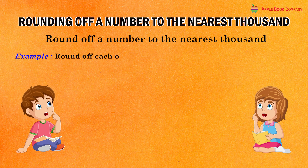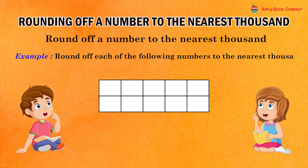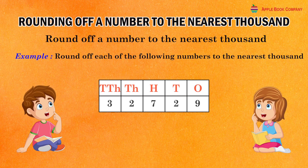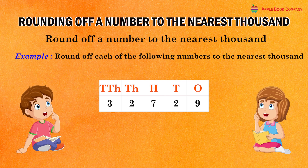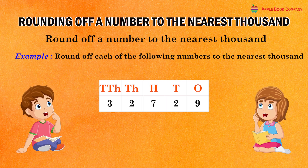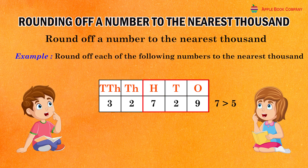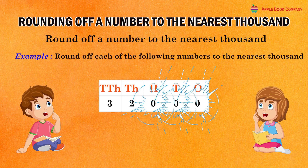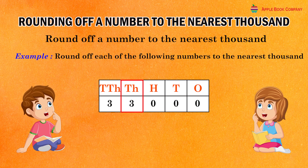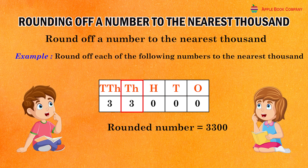Round off each of the following numbers to the nearest thousand. In the given number 32729, the hundred's digit is seven which is greater than five. So, replace each one of the hundreds, tens and one's digits by zero and increase the thousands digit by one. Rounded number: 33000.